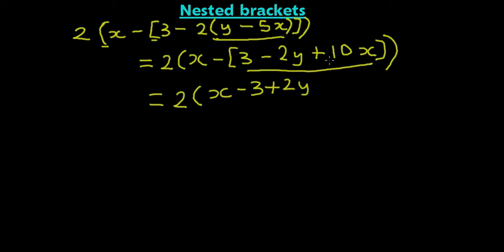Then minus times plus 10x. It changes the sign. Minus times plus gives you minus. So it changes that sign to minus 10x. So we have eliminated the inner bracket.